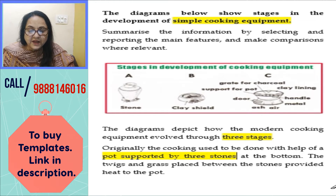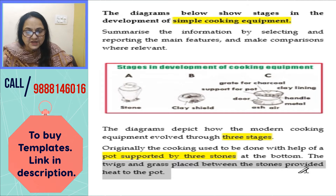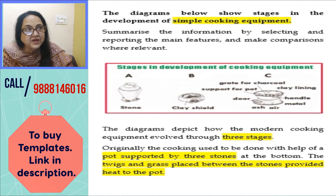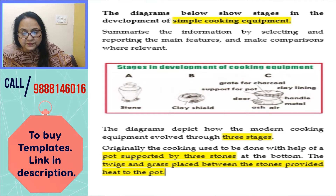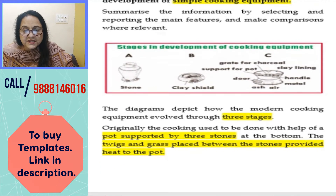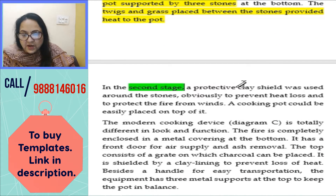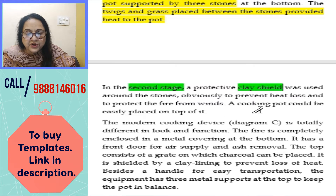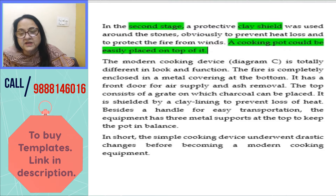Then we will carry forward. The second stage involves twigs, grass, clay, and a shield. The second stage is a stone structure that prevents heat loss, protects the fire from the wind, and allows the cooking pot to be easily placed on top of it. There is a kind of evolution in the second stage.